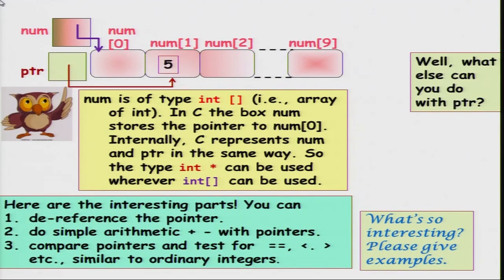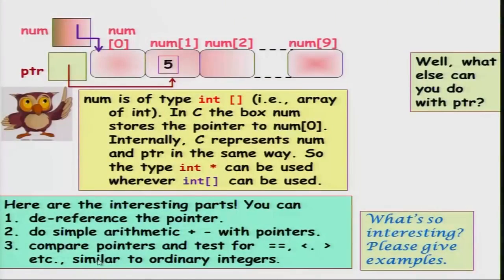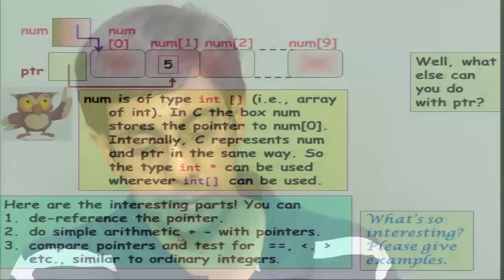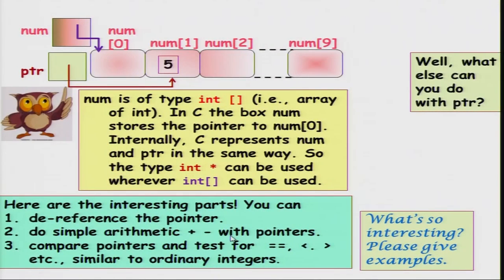Here are some other interesting things you can do with pointers. Whenever you declare a data type you also define what operations you can do with it. You can do simple arithmetic — plus and minus — with pointers. You cannot do multiplication or division, but you can do plus and minus. Similarly, if you have two pointers you can test for equality, less than, greater than, and so on as though comparing ordinary integers. Addition, subtraction, and comparison are supported, but multiply, divide, and modulo are not.